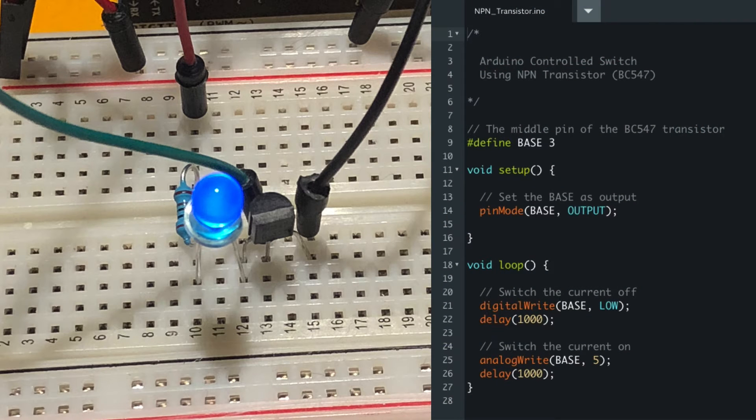To control the base, the middle pin which controls the flow, we essentially do a blink sketch. We define the base as pin 3 and set it as output.